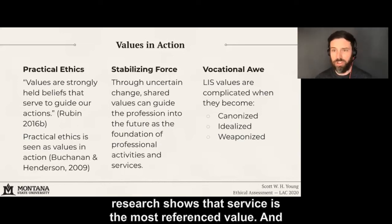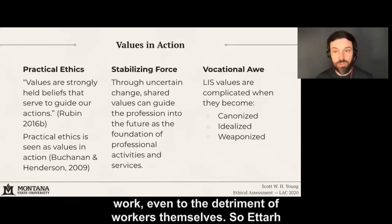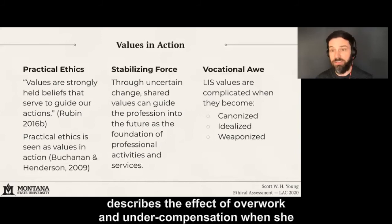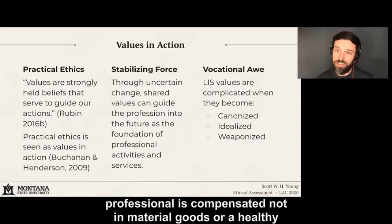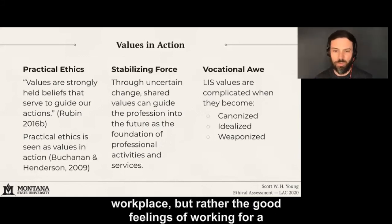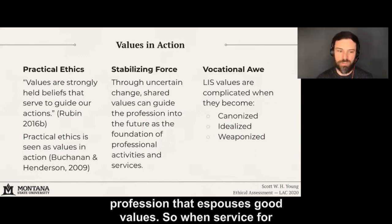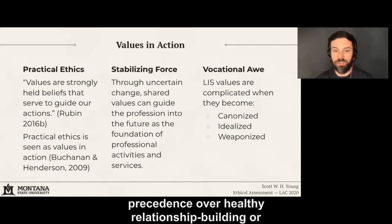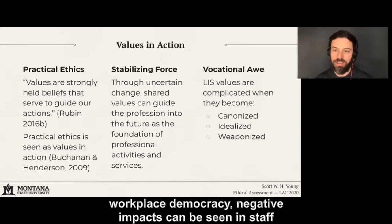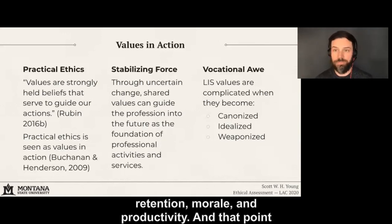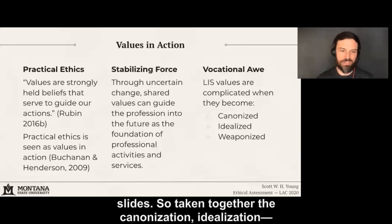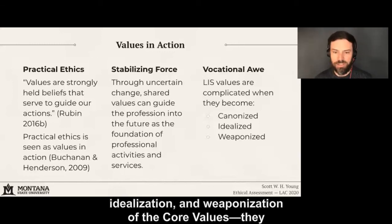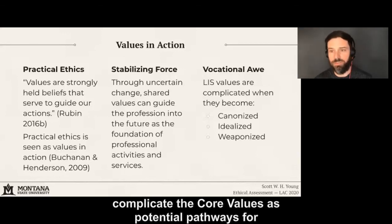My research shows that service is the most referenced value, and indeed service may be said to be the dominant mode of our work — even to the detriment of workers themselves. Etar describes the effect of overwork and undercompensation when she theorizes vocational awe: the library professional is compensated not in material goods or a healthy workplace, but rather in the good feelings of working for a profession that espouses good values. When service is upheld as the highest priority, taking precedence over healthy relationship building or workplace democracy, negative impacts can be seen in staff retention, morale, and productivity. Drawing on Ortega and Kendrick, the canonization, idealization, and weaponization of the core values complicate them as potential pathways for professional and societal growth.